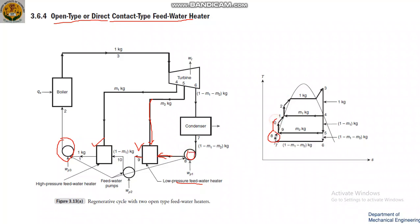In this last pump stage, there will be three pumps in total in the open type feed water heater system.